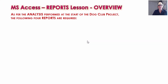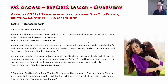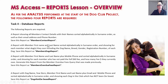As per the analysis performed in the dog club project back in the analysis document when we started, Juanita said she wanted four reports: the member's contact report, the member's dogs report, the overdue fees, and the de-sexed report. These have already been made in the queries, and all we're going to do is turn the queries into really nice-looking formatted reports.